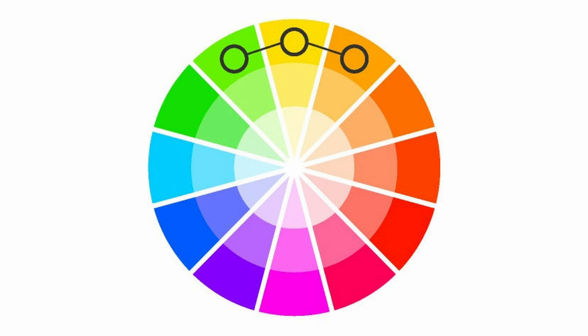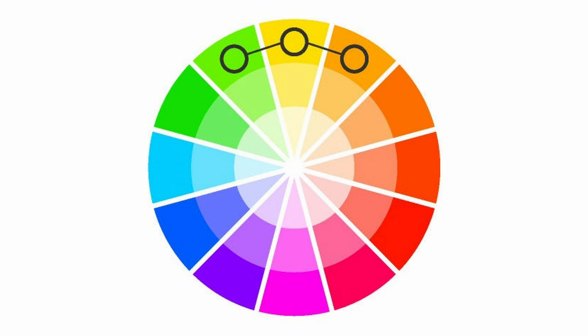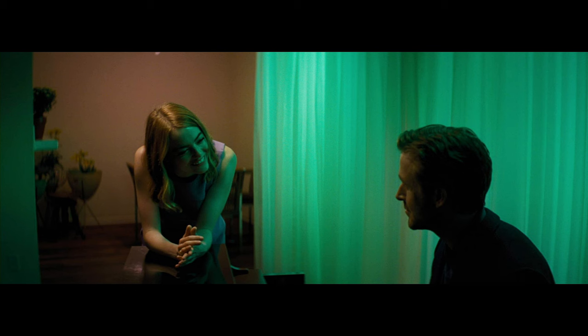Lastly is analogous. This is a very interesting color scheme — I actually had to study it a bit more just to make sure I understood it well. You're basically taking three hues that are adjacent to each other and that is your color palette. For example, in La La Land, this is a really cool scene — you have a yellow, yellowish green, and orangish yellow, and you're in that color palette.